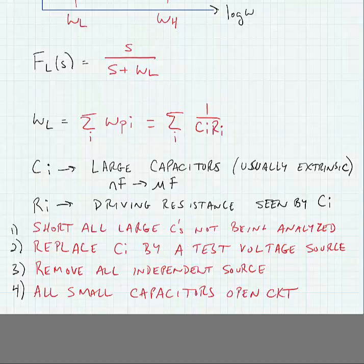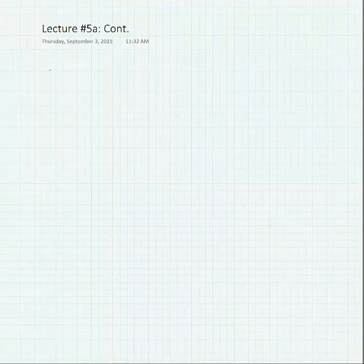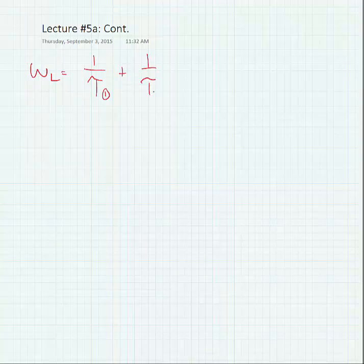This makes sense because at low frequencies, their impedances will be very high. Now, we're going to find multiple time constants for every big capacitor in the circuit. And this is going to be a little bit different than OCTC. Our omega L is going to be equal to the sum of one over the time constant for each of those big capacitors.